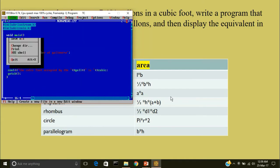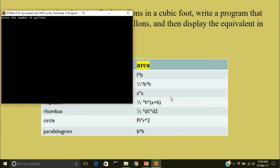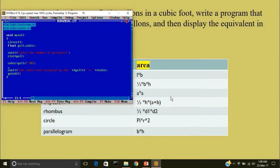I'll compile it. I'll run the program. Enter the number of gallons for example 21.48. Okay, so the cubic foot occupied by 21.48 is 2.871.